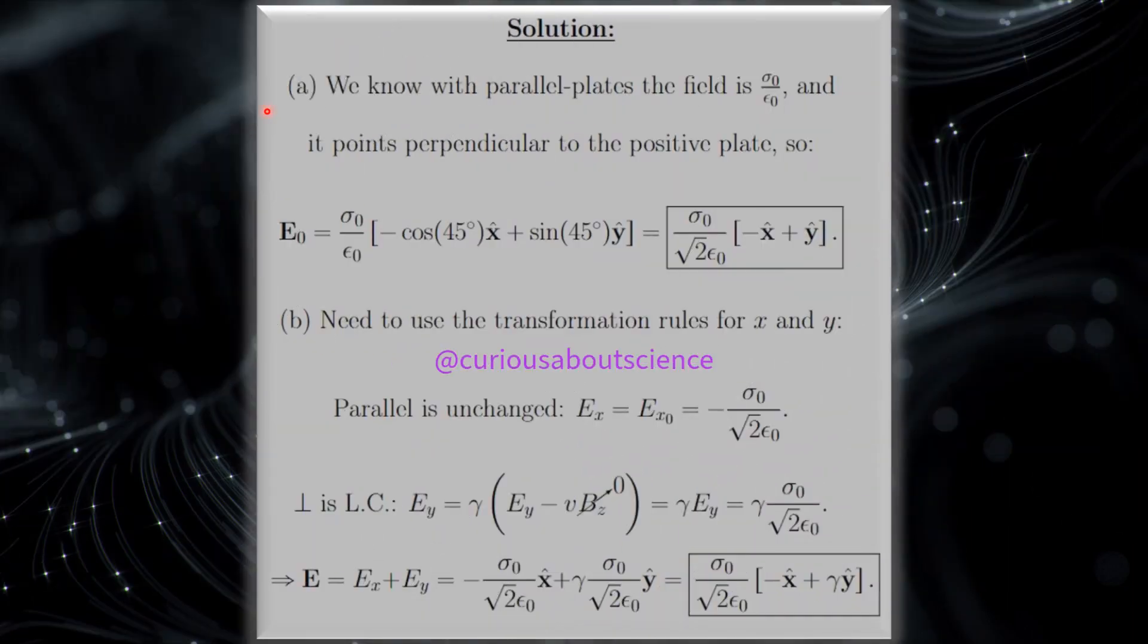Alright, so in part A, what we see is that for the parallel plates, the field is σ₀ over ε₀, and it points perpendicular to the positive plate. We know it's coming out, and we'll see all this in the next slide when we draw out the normal direction. However, we know that E₀ here is equal to σ₀ over ε₀ at 45 degrees. So we're going to have to take into account sine pointing in the Y, X pointing in the negative direction, so hence the negative there. These are both root 2 over 2, or if you don't rationalize one over root 2, so we factor that one over root 2 out, and we're left with this expression in the box. Pretty easy there.